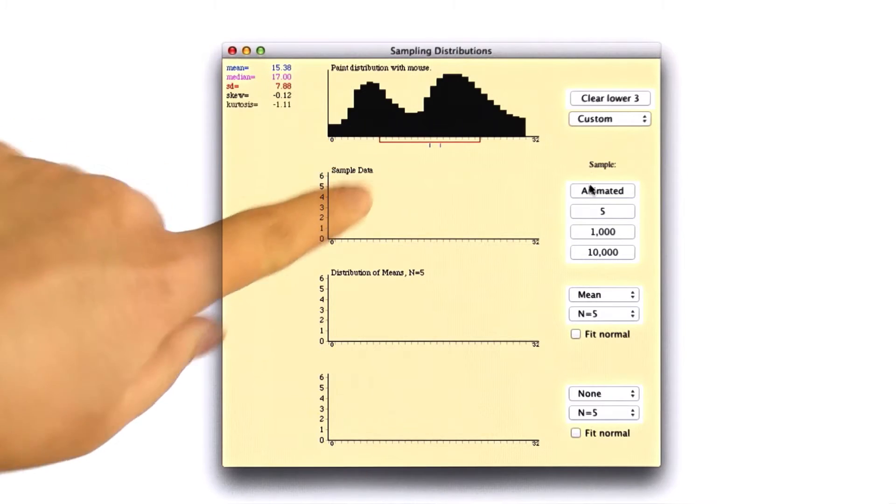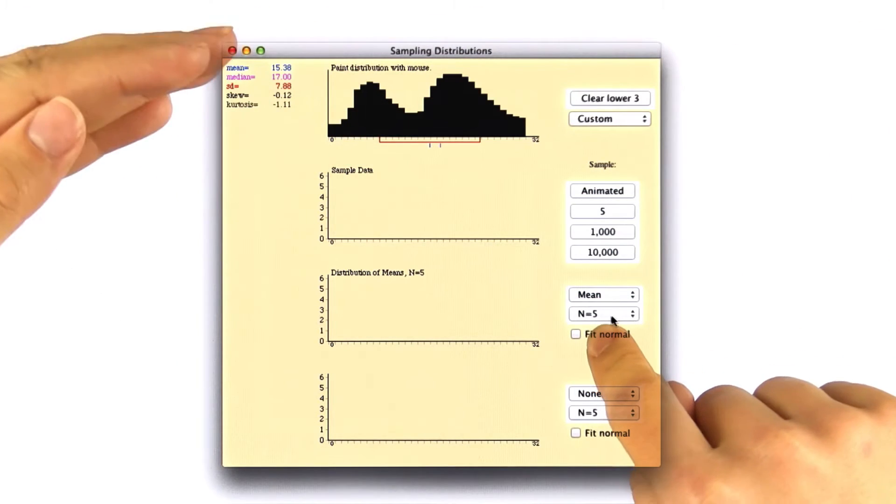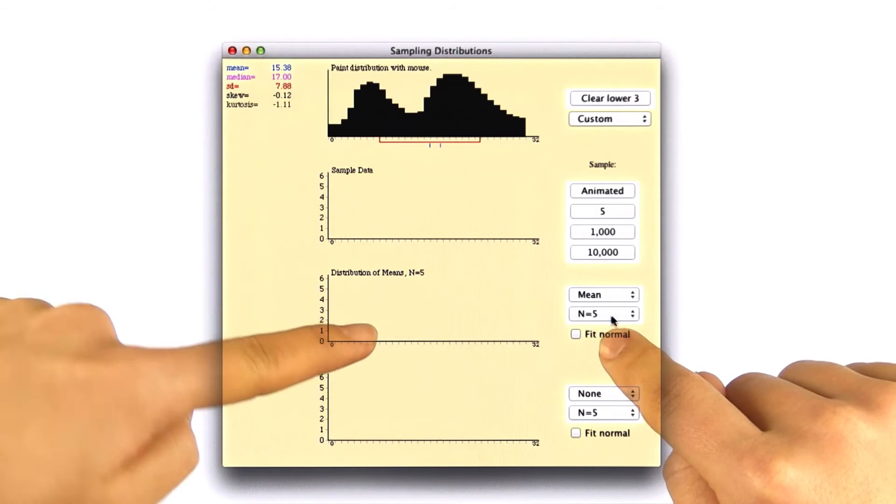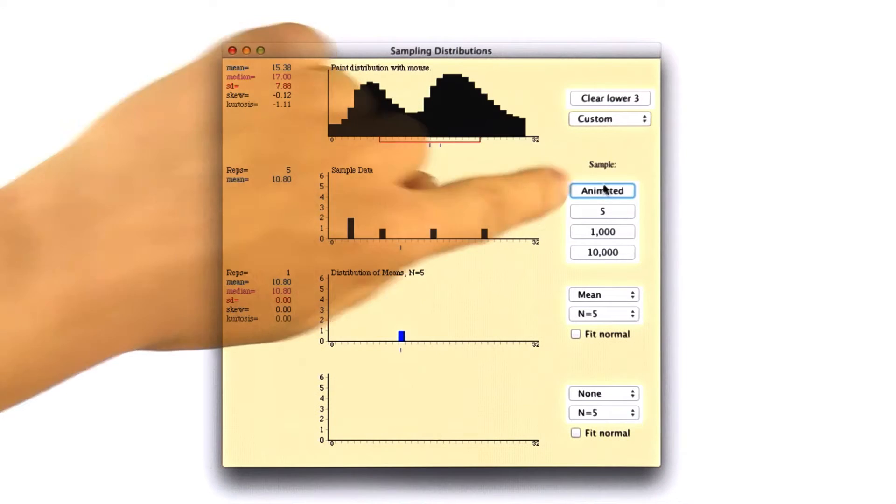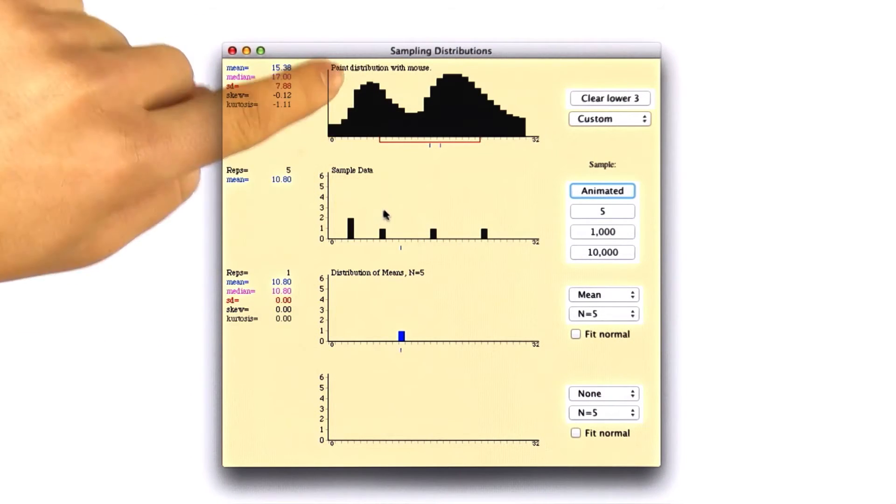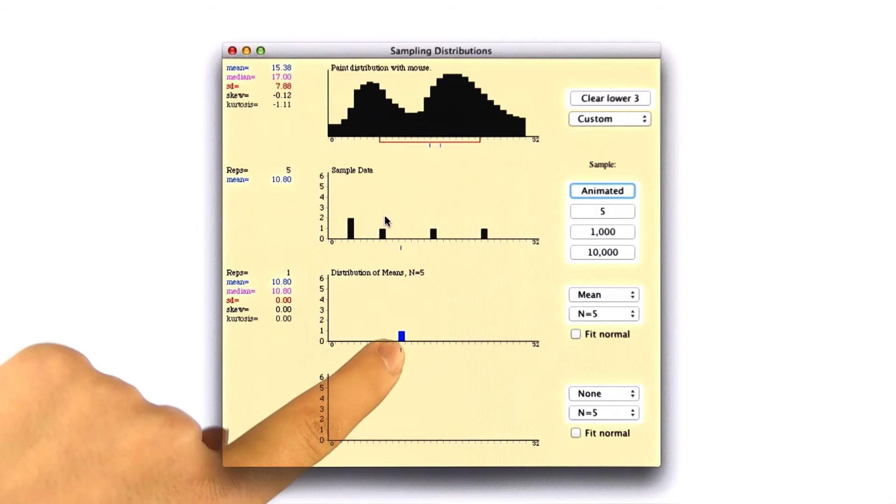And then you can simulate taking, for example, five values from this population, finding the mean, and graphing it. So I clicked animated here, and it found five random values from this population, and then plotted the sample mean.